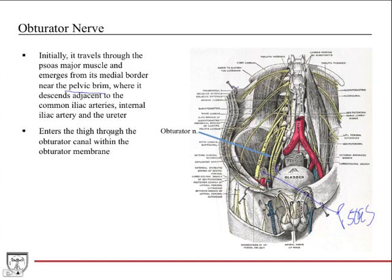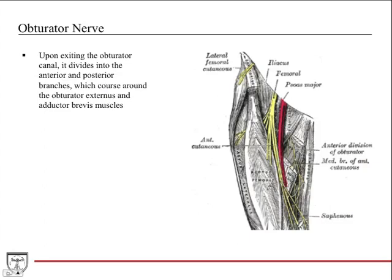It enters the thigh through the obturator canal within the obturator membrane. Exiting the obturator canal, it's going to be deep to the pectineus muscle. Here's the anterior division of the obturator. The posterior division dives back, so it divides into anterior and posterior branches, and they course around the obturator externus and adductor brevis muscles.